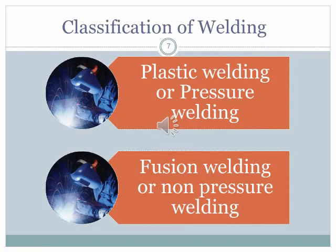Welding can be broadly classified into two types: plastic welding or pressure welding, and fusion welding or non-pressure welding. These are the two broad classifications of the welding process.